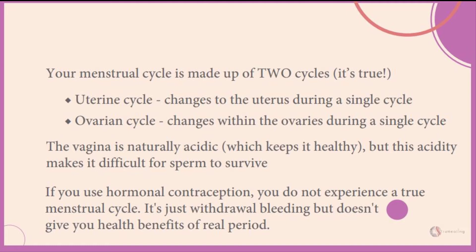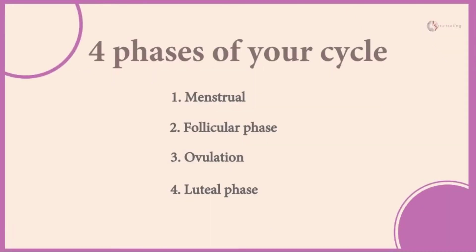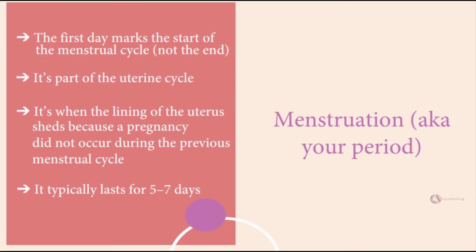The menstrual cycle is not just a 3 to 5 day period happening below your waist. It's around a 28 to 35 day conversation happening between your brain and the ovary. We all know about the menstrual phase when the bleeding happens, but there are 3 other phases: the follicular phase, ovulation phase, and the luteal phase. Let's get started with the first phase — menstruation, also known as your period.